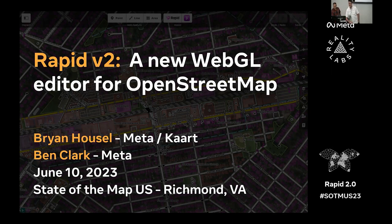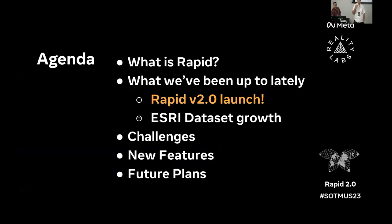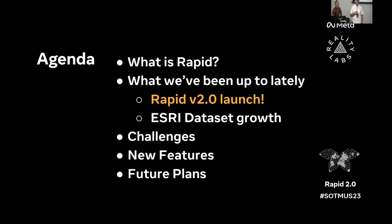We're really excited. So what is Rapid? We're going to cover that. It's an OpenStreetMap app editor. It's based off iD. It's web-based. What we've been up to lately is we had a launch of Rapid version 2 last month — or two months ago in April. We're going to talk about some dataset growth for our partners at Esri, where we have an API integration. And we'll talk about challenges building v2, new features, and future plans.